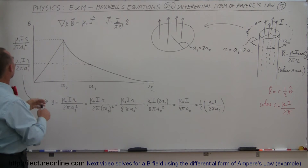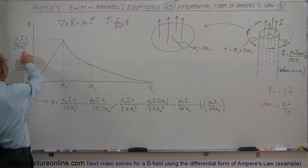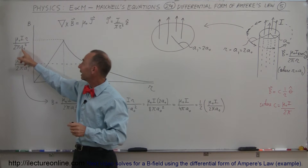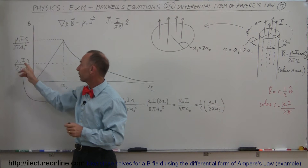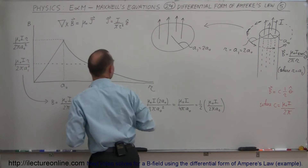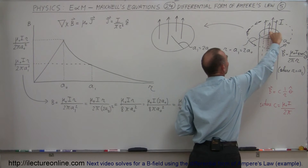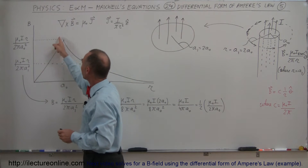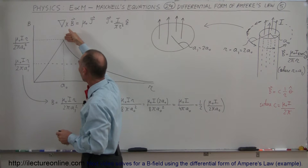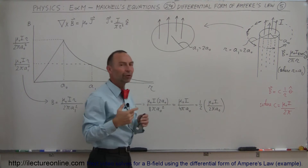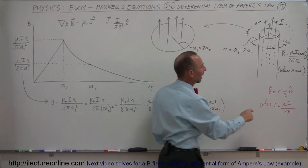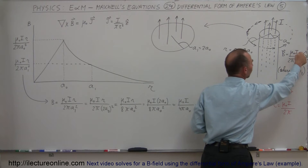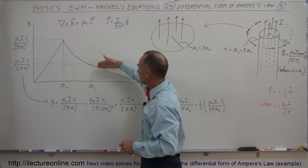The B field inside is given by mu-naught I divided by 2 pi A-naught squared, times R — R being the only variable, and A-naught is the distance from the center to where the current stops flowing. Past that point, it becomes a 1-over-R relationship, and the equation looks like mu-naught I divided by 2 pi times 1 over R.